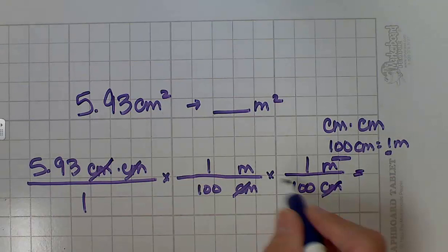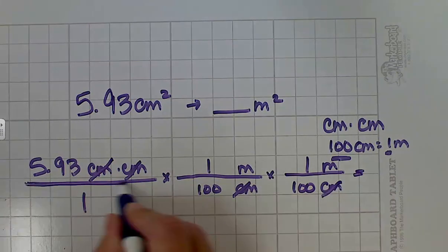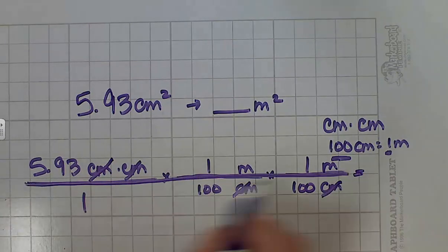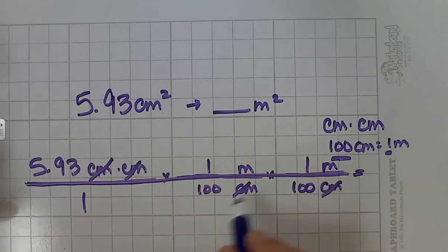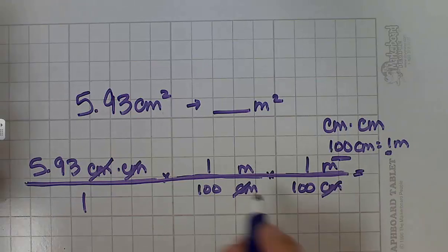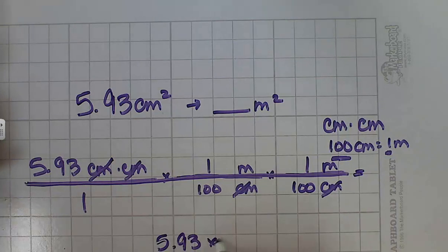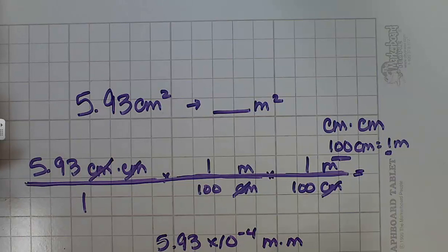I can draw my line if I need to. 5.93 times 1 times 1 is 5.93, divided by 100, divided by 100. So let's see what that gives us. 5.93 divided by 100, divided by 100 again. And that tells us our answer is 5.93 times 10 to the negative 4th meters times meters, or 5.93 times 10 to the negative 4th meters squared. So you do have the correct units and you're good to go.